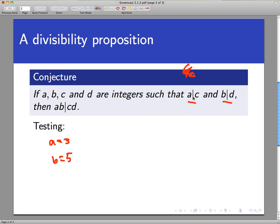c and d can't be any integers. They need to be such that a divides c and b divides d. Remember what this means is that c is an integer multiple of a. There is some integer q such that c equals a times q. So let's pick an integer multiple of 3, say 27, which is 9 times 3. And let's pick an integer multiple of 5, say 10, which is 2 times 5. Now does the conclusion follow? Does ab divide cd? Well ab is 15 and cd is 270.